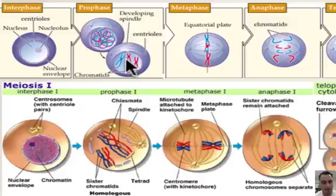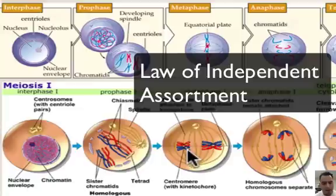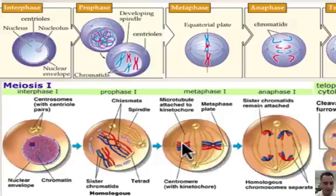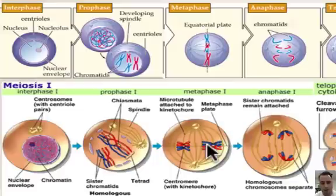That crossing over doesn't happen in prophase of mitosis — remember that. In metaphase one, you have the law of independent assortment. The chromosomes line up in pairs, and they can line up independently of the other chromosomes. So the blue might be on this side and the red on that side, or they could switch. That's the law of independent assortment — random lining up gives you a lot of options and therefore many different combinations of sex cells.